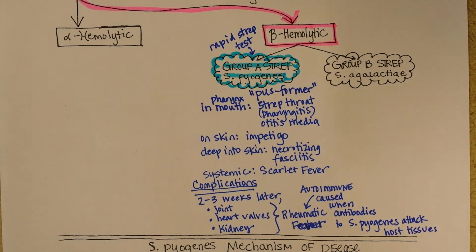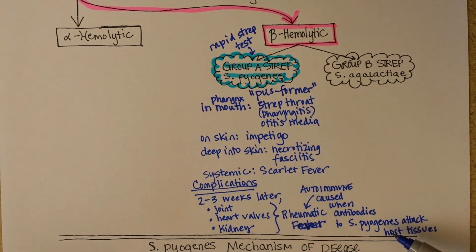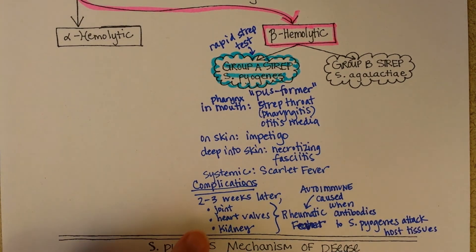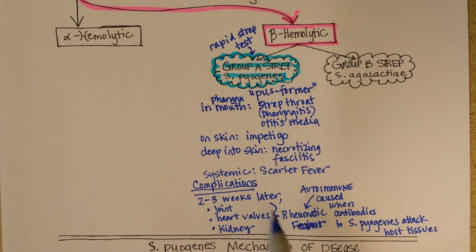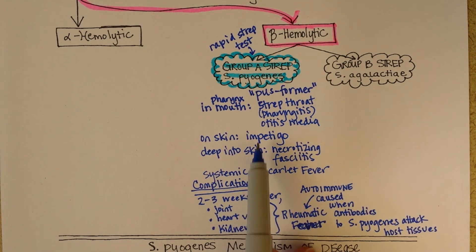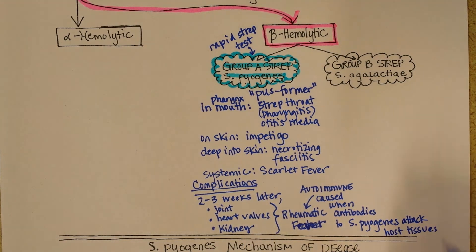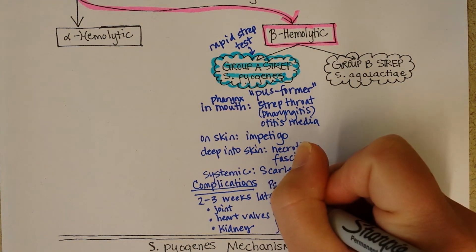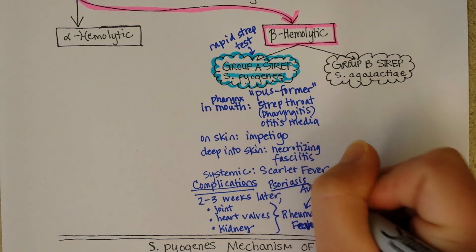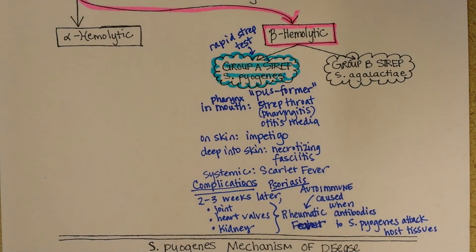By definition, autoimmunity is when your own antibodies attack host tissues. In this case the antibodies did have the important purpose of taking out Streptococcus pyogenes, but it's like collateral damage — the joints, heart valves, and kidneys may also be damaged. A couple of students told me that a complication they later got was psoriasis, so we could put that on here too. Psoriasis is sometimes a complication of an autoimmune reaction after a strep infection.